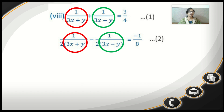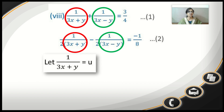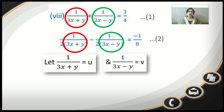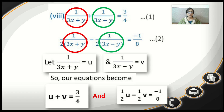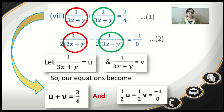We write 1 upon (3x plus y) as u and 1 upon (3x minus y) as v. The first equation becomes u plus v equals 3 by 4, and equation 2 becomes 1 upon 2 times u minus 1 upon 2 times v equals minus 1 upon 8. We have simplified both equations using this substitution.